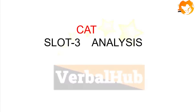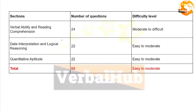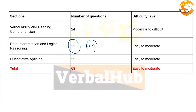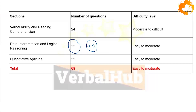The difficulty level and number of questions were mostly the same as previous years, with one change — DILR had two more questions added this year. In previous years DILR had 20 questions, but this year we got 22, so the total question count has been raised from 66 to 68.